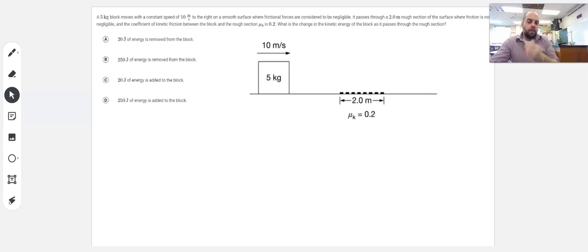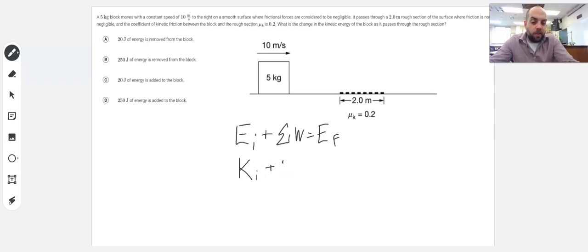What is the change in kinetic energy of the block as it passes through the rough section? So with this one, we're looking at the work-energy theorem. The whole idea here is that it starts off with some initial kinetic energy, and then work is done by friction. That's the only outside force doing any work on this block system. And then at the end, you've got kinetic energy final.